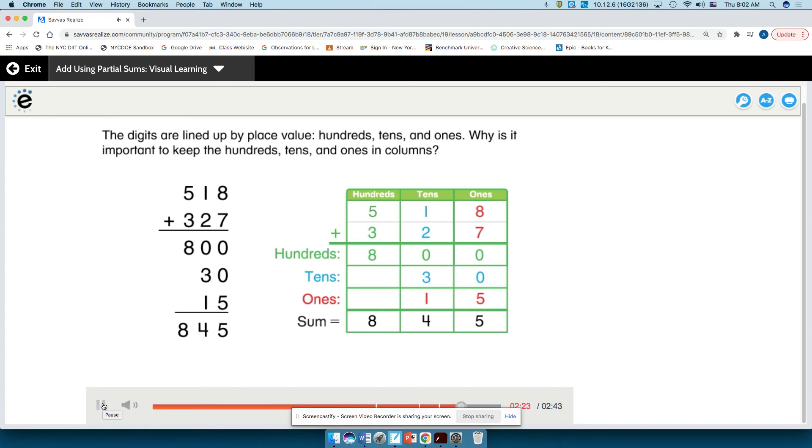Why is it important to keep the hundreds, tens, and ones in columns? When the digits are lined up in columns, it makes it easy to keep track of the value of the digits and find the partial sums.